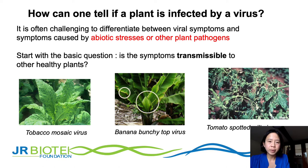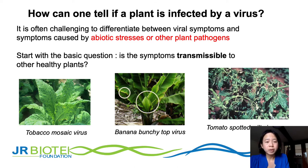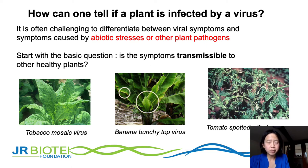How can one tell if a plant is infected by a virus? It is often really hard, especially in the field, to differentiate whether symptoms are caused by abiotic stress such as drought, by other pathogens such as bacteria and fungi, or by a plant virus. One of the most basic questions to address first is whether the symptoms are transmissible to other healthy plants. This can be done by cutting an infected leaf, crushing it, and sub-inoculating it onto a healthy plant of the same species to see if the same symptoms develop.